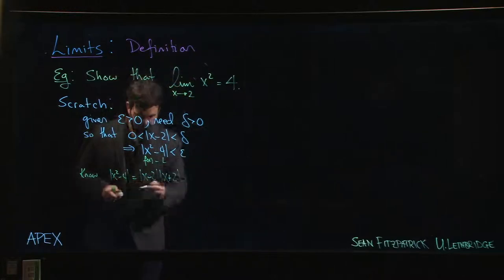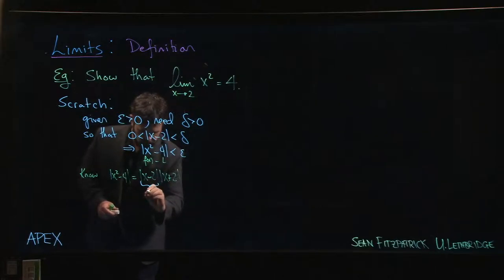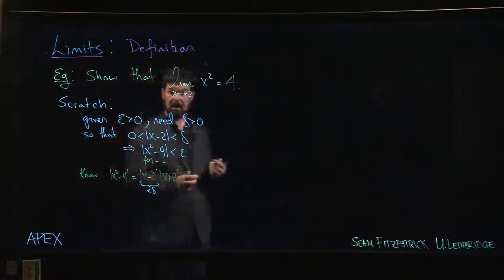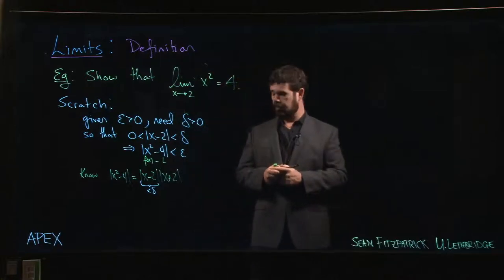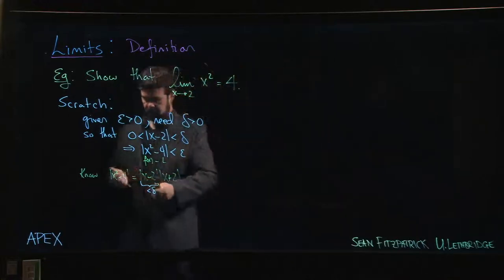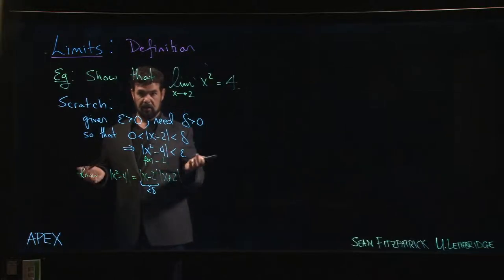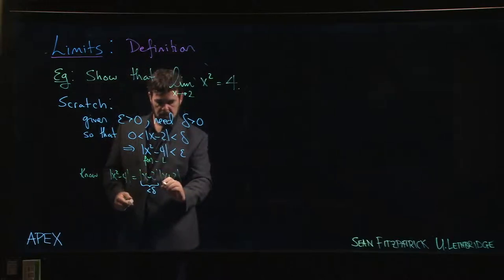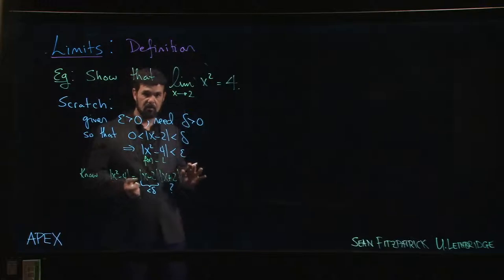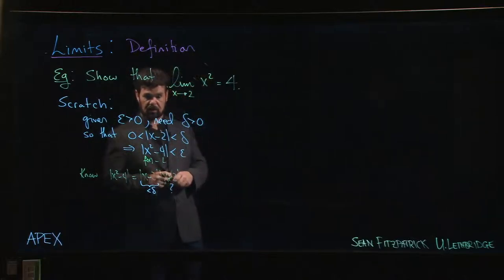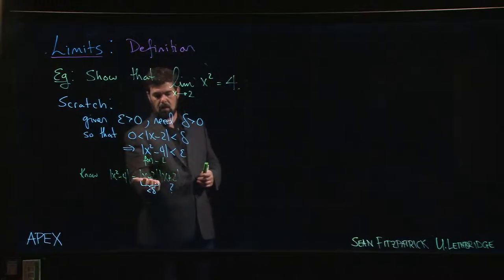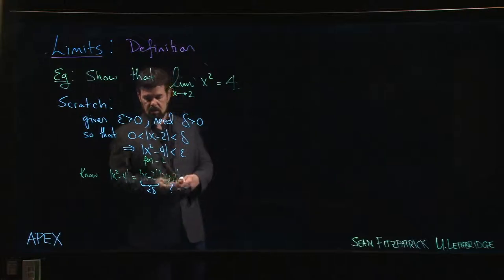And the key here is that we know this part, well, we can make that less than delta. And we can make delta whatever we want as long as it's a positive number. So we have some control here. So here's a part we have direct control over because that's the part that we're going to make less than delta and then we can make delta to be however small we need it to be. But then there's this other part here that we don't have sort of immediate control. We're not quite sure what to do with the x + 2. So there's no obvious immediate comparison between x - 2 and x + 2.